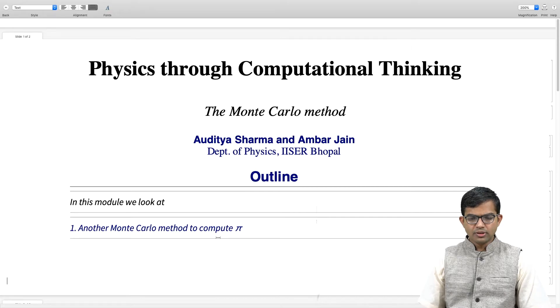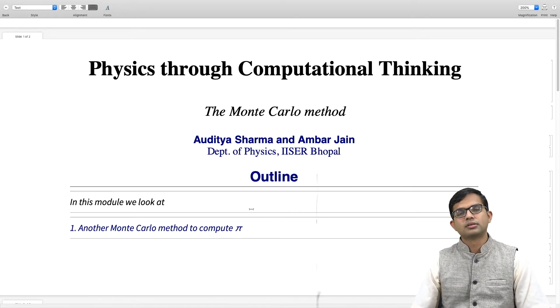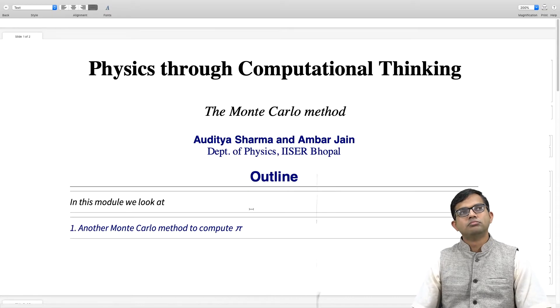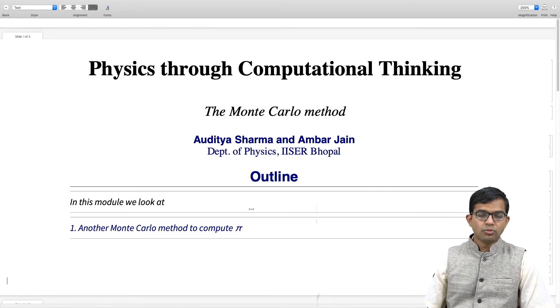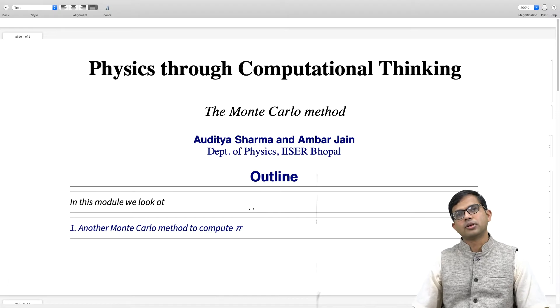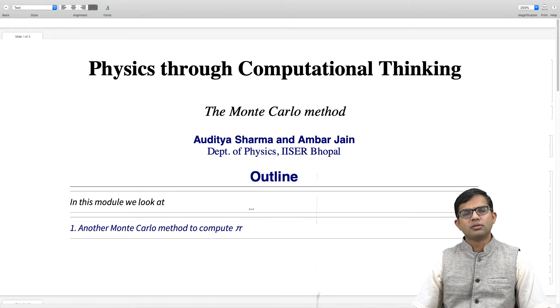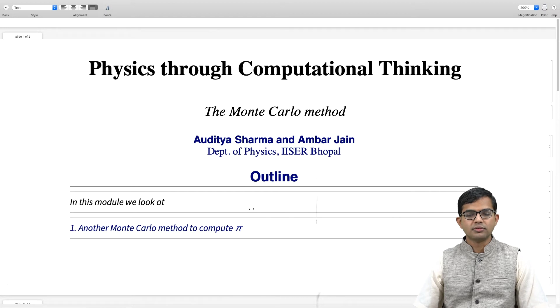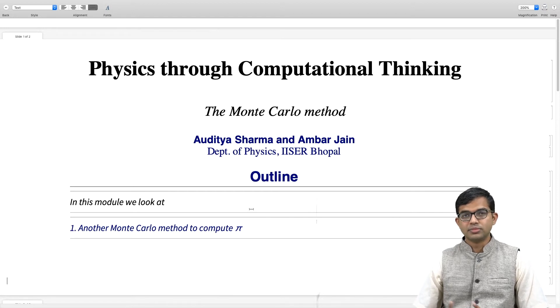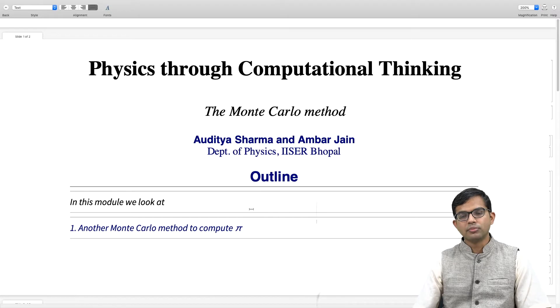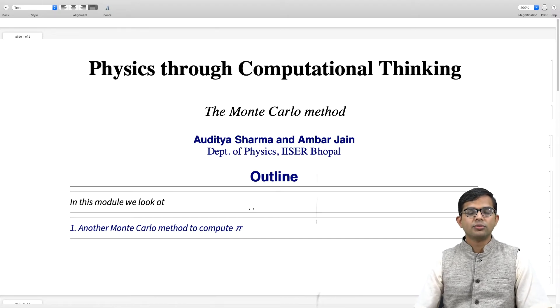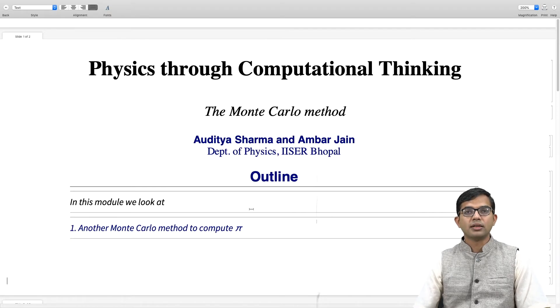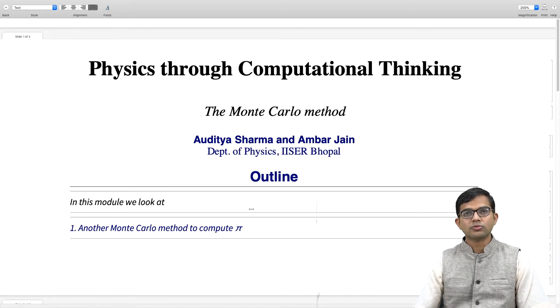The method that I am going to describe here is related to something called the Buffon's needle drop experiment. This is a centuries old problem which was considered by this person called Buffon. Imagine dropping a lot of pins on a sheet of paper which has lots of parallel lines, like your ruled notebook for example.